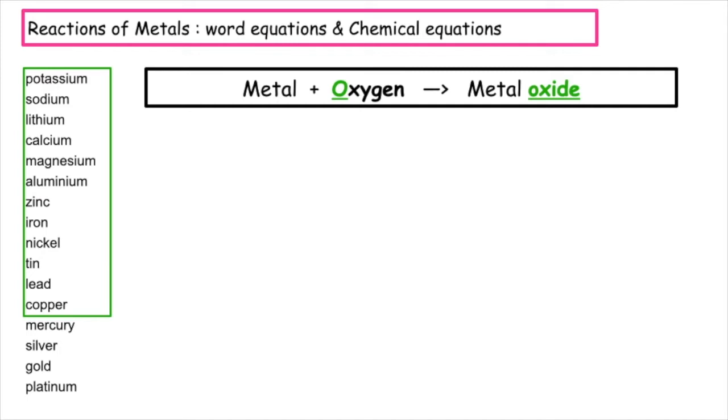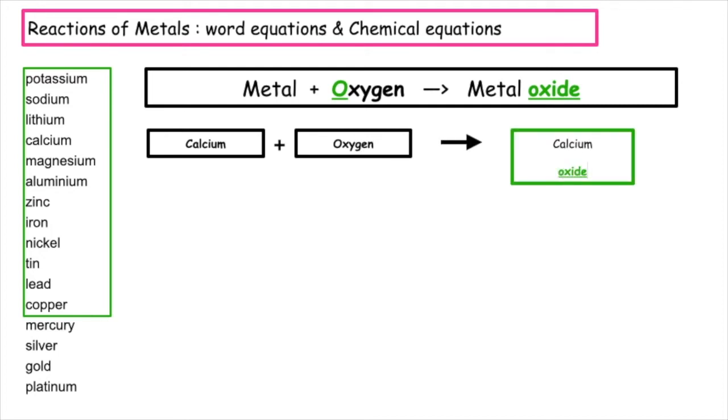What we have to be able to do with this is create a word equation and then do the chemical equation and balance it. So if I chose calcium as my metal and reacted it in oxygen, I would produce calcium oxide.